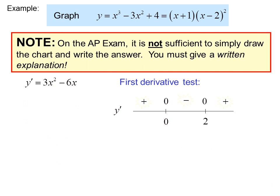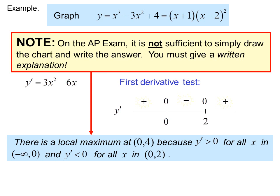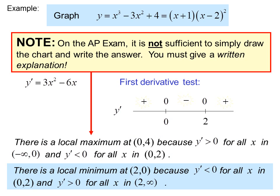On the AP exam it is not sufficient to simply draw the chart and write the answer — you must give a written explanation. There is a local maximum at (0, 4) because y prime is greater than 0 for all x in the interval from negative infinity to 0, and y prime is less than 0 for all x in the interval from 0 to 2. There is a local minimum at (2, 0) because y prime is less than 0 on (0, 2) and y prime is greater than 0 for all x in the interval from 2 to infinity.